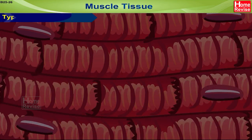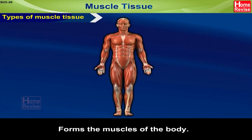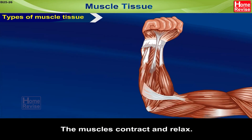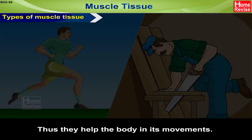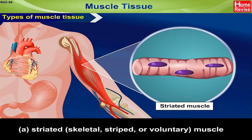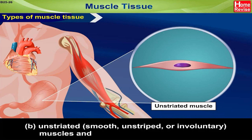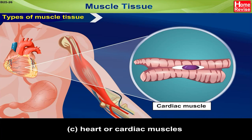Muscle tissue forms the muscles of the body. The muscles contract and relax, thus helping the body in its movements. Three kinds of muscles are: A. Striated — that is, skeletal, striped or voluntary muscles; B. Unstriated — that is, smooth, unstriped or involuntary muscles; and C. Heart or cardiac muscles.